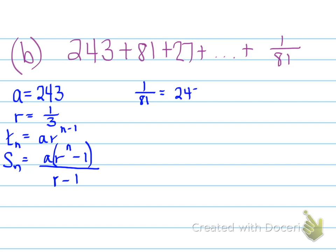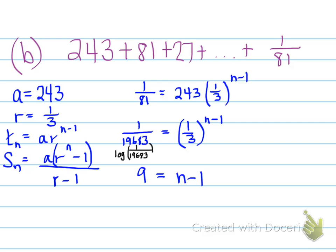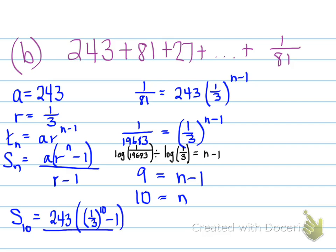So we plug it in, and we find out that once we find this value, that the term number, the number of terms there are, is actually 10. And the value of n is 10. Alright, this is showing how to do the logarithm. So once we find out that the n value is 10, find the sum of the first 10 terms, plug it all in, and it turns out to be that our value for this is going to be 29,524 over 81. That is the sum of the first 10 terms.